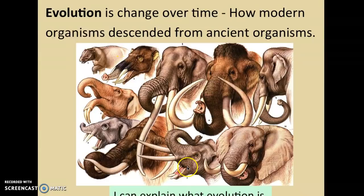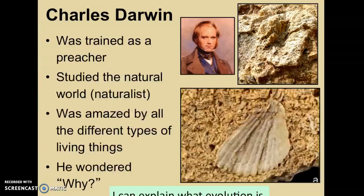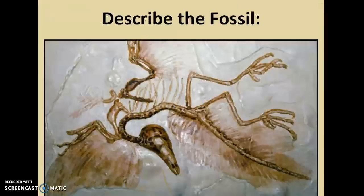Charles Darwin is the scientist who came up with evolution, based on his observations of the natural world. He was a naturalist — a scientist who studied the natural world — and he was also trained as a preacher. He was amazed by all the different things he observed and was very curious, always wondering why. Why do these things look similar? Why do all of these finches live in this area but have different shaped beaks? He wanted to explain and figure out why the things he observed were the way they were. Take a moment to observe the fossil shown here and record your thoughts in your notebook.